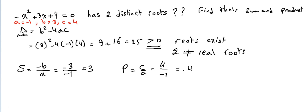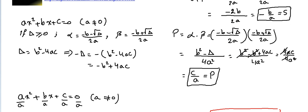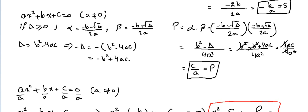This is algebra: quadratic equations, part 4, and part 2 for sum and product. In the previous video we found the rules: the sum of the roots is always equal to minus b over a, and the product is always equal to c over a.